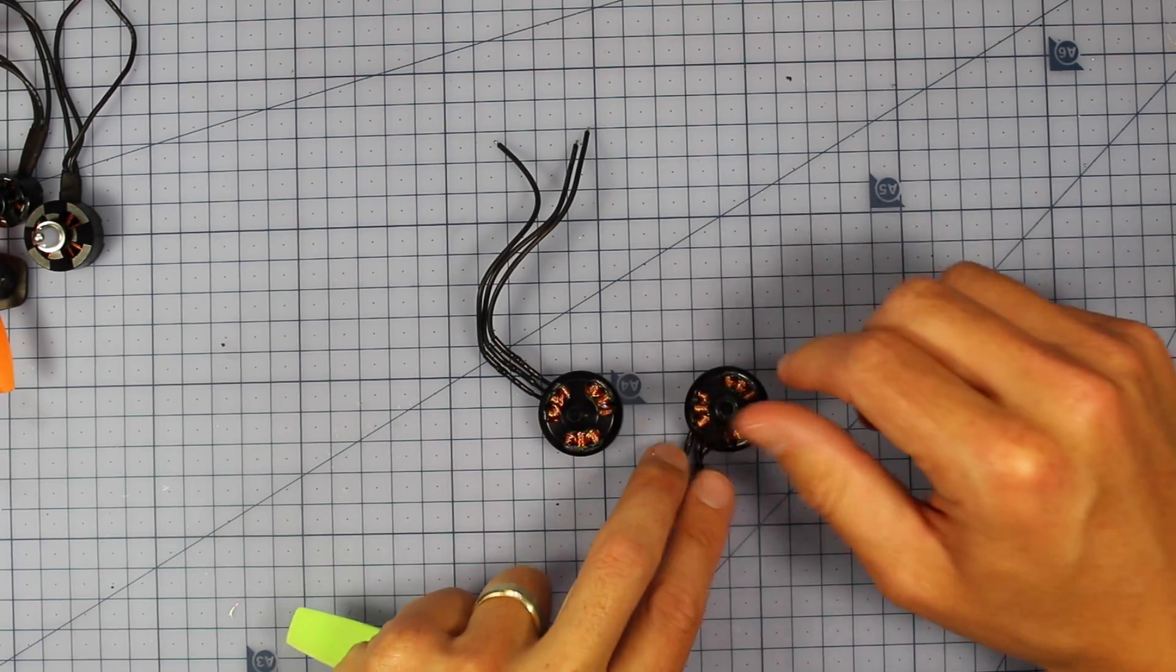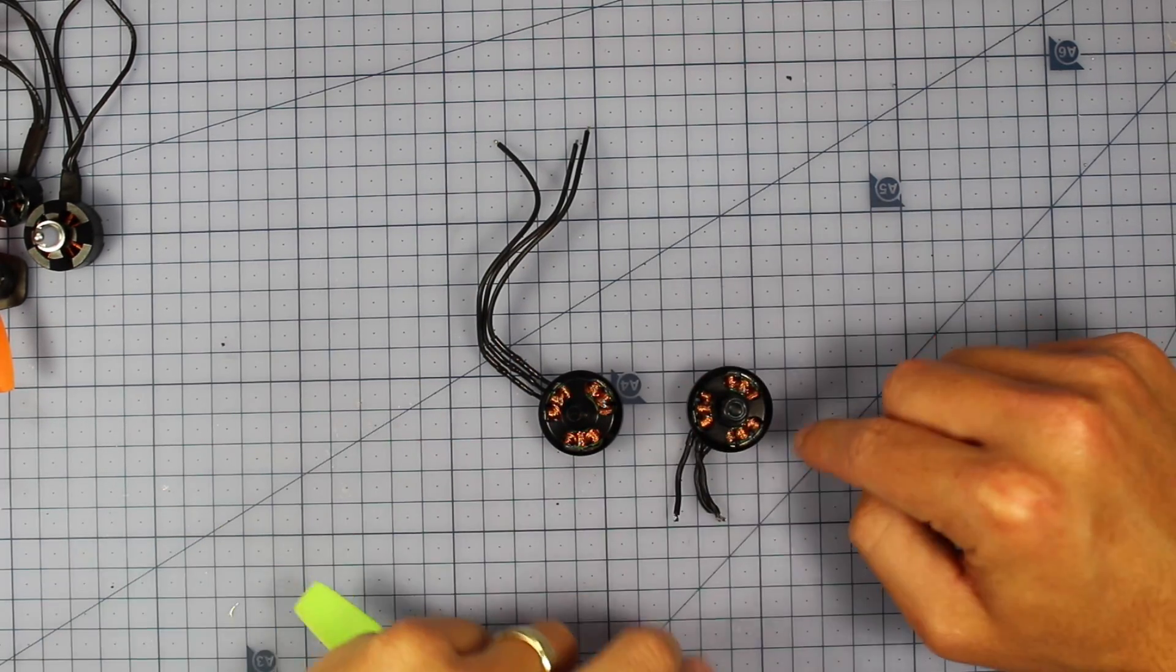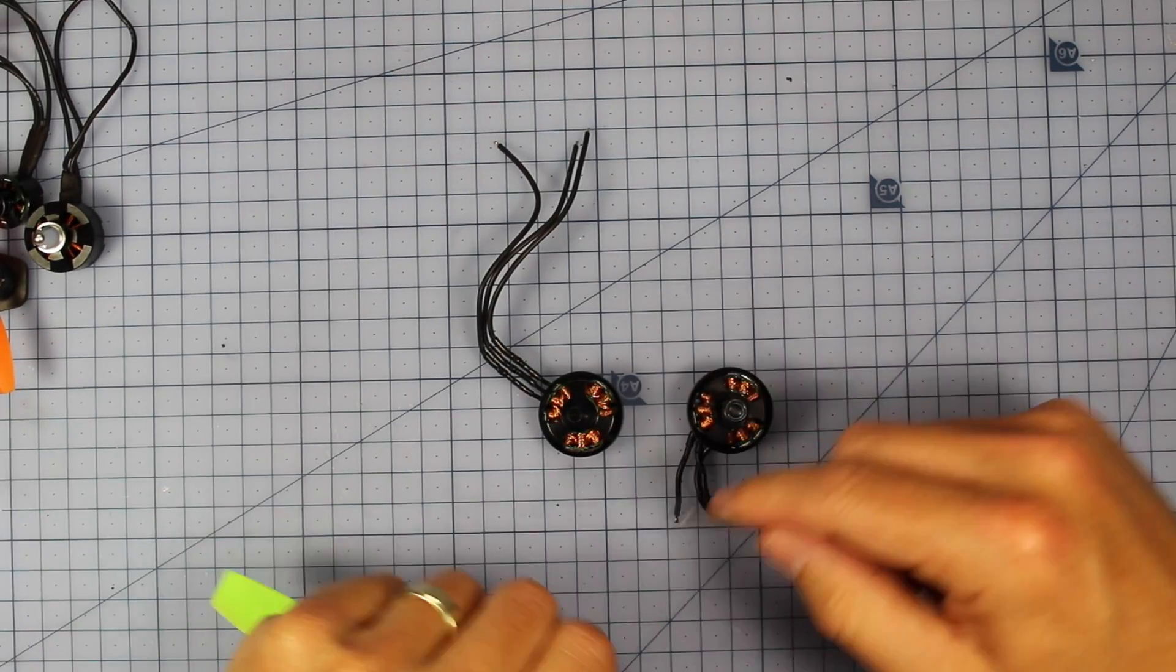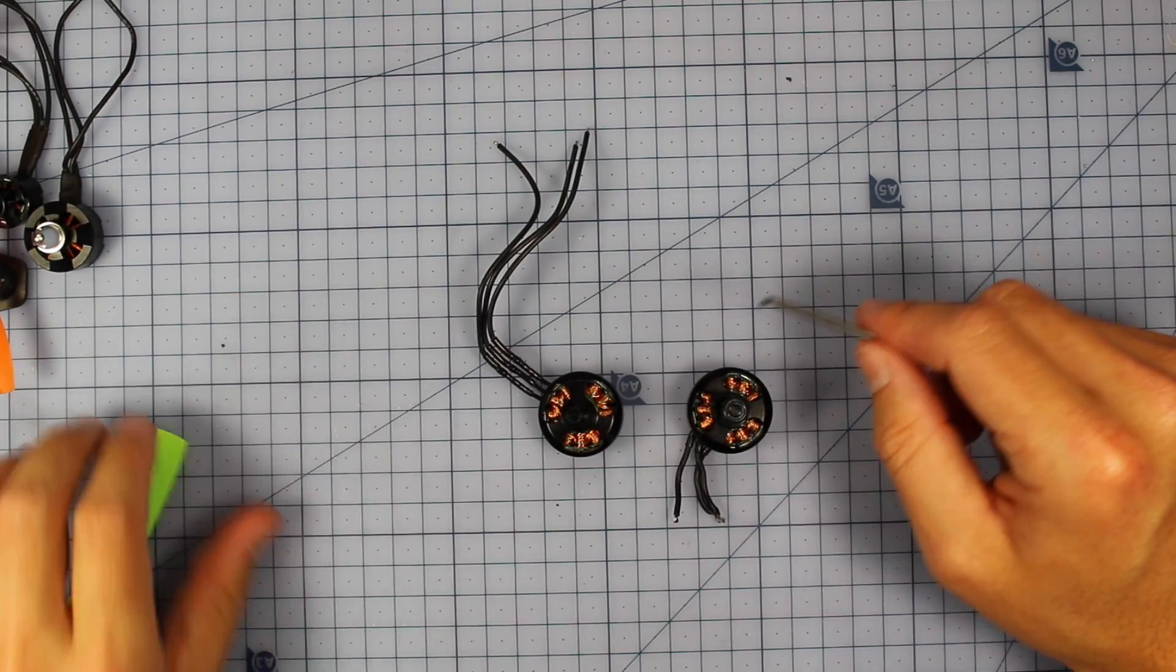There's some other factors that come into play, but that's the general rule. The bigger the motor and the larger the stator usually means they're going to be better suited to spinning a bigger prop, and also at a lower KV, which brings us into our next topic, the KV rating.